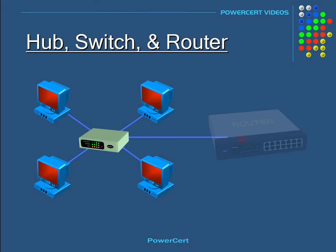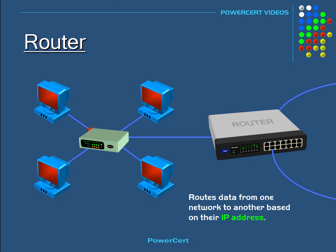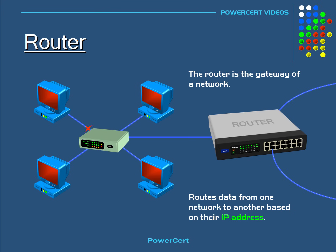So that's where the router comes in. A router does exactly what its name implies — it's a device that routes or forwards data from one network to another based on their IP address. When a data packet is received by the router, the router inspects the data's IP address and determines if the packet was meant for its own network or if it's meant for another network. If the router determines the data packet is meant for its own network, it receives it. But if it's not meant for its own network, it sends it off to another network. So a router is essentially the gateway of a network.